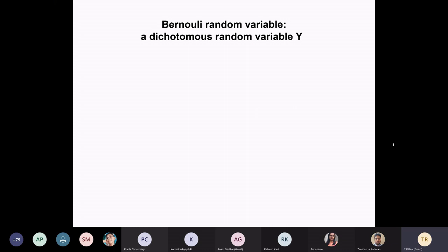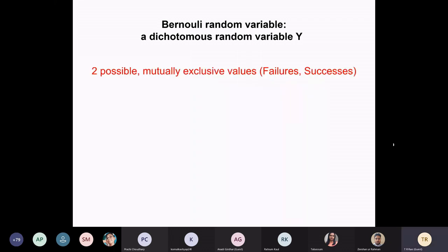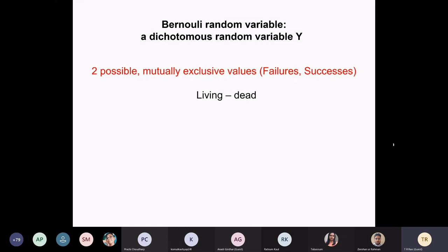Binomial — by the very term — means it uses a dichotomous variable. There are two mutually exclusive values, or what we call in statistical parlance 'failures and successes,' such as living and dead. Only two possible outcomes. You cannot be half dead — either you are dead or living.